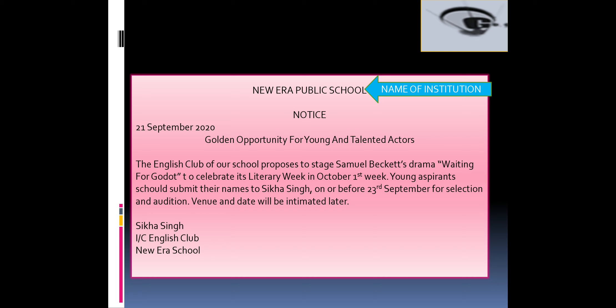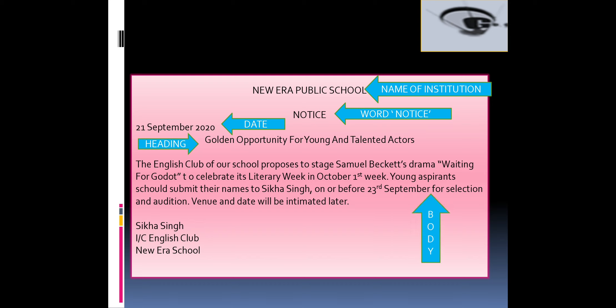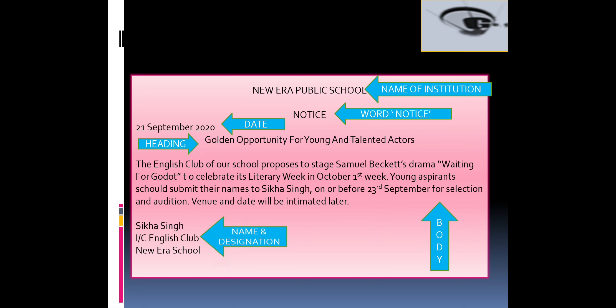So to recap Sample 1: New Era Public School is the name of the institution, followed by the word NOTICE, then the date, then the heading. After writing the heading, leaving a line we write the body, and finally, leaving a line, we write the name and designation.